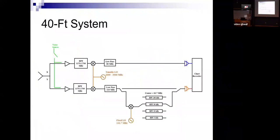Now I'm going to start talking about the 40-foot telescope. If I did this for the 20-meter which you will be using, it would look a lot like this. We have the feed, a polarizer which splits the signals into two polarizations, and then two identical chains each with an amplifier, a band-pass filter, a mixer, and a low-pass filter. This then goes through a second mixer, some more band-pass filters, and then to a detector — think of a detector as a voltmeter.